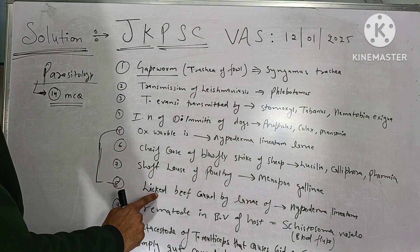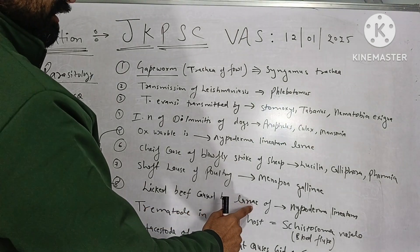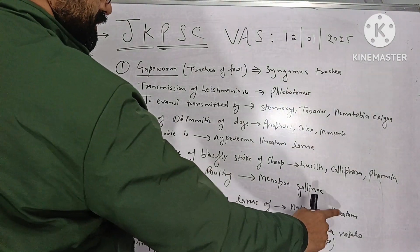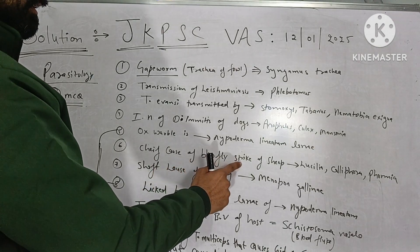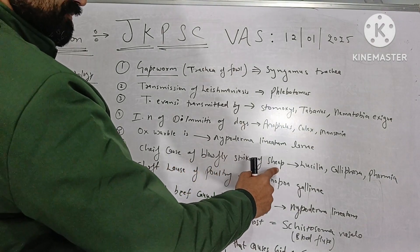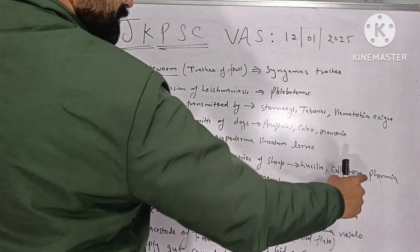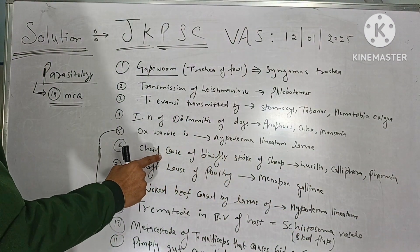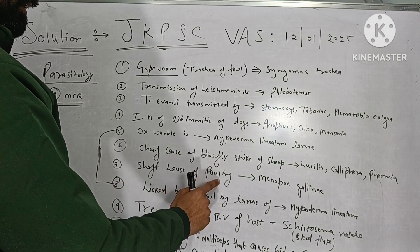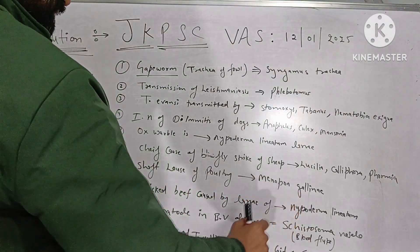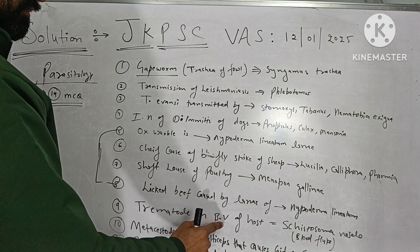One more MCQ was asked on Hypoderma — licked beef is caused by larvae of Hypoderma lineatum. Next is the cause of blowfly strike in case of sheep; there are three species including Lucilia cuprina and others, so 'all of the above' is the answer. Shaft louse of poultry is Menopon gallinae.